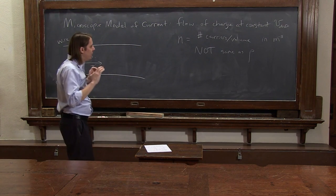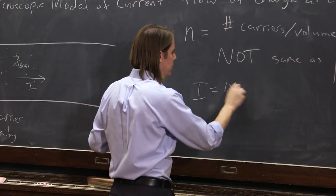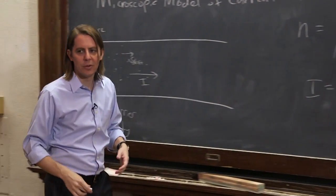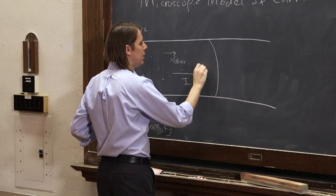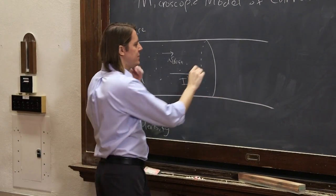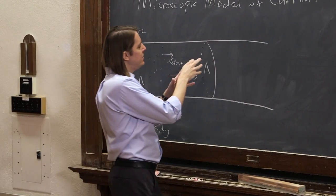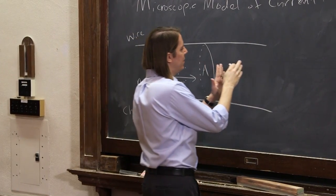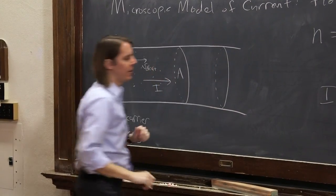So let's think about our model. The current i we said was delta q delta t. So now let's write that in terms of the microscopic model. If we pick an area like this, we're going to think about the number of charges that go across that area. And in a unit of time delta t, all the ones that cross that area are going to get to a certain distance to over here. They're going to make it to there.